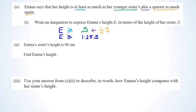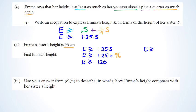Emma's sister's height is 96 centimeters. Using our equation, Emma's height is greater than or equal to 1.25 times 96. You can also compute it as 96 plus 96 divided by 4: 96 divided by 2 is 48, 48 divided by 2 is 24, so 96 plus 24 gives Emma's height greater than or equal to 120 centimeters.